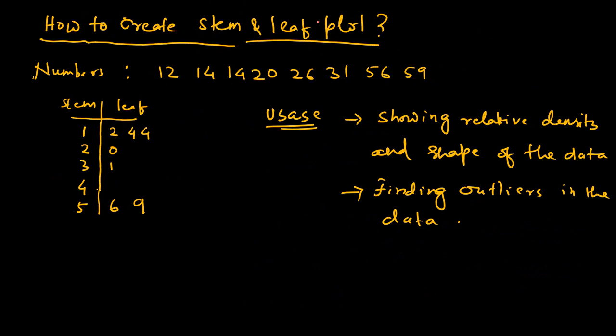How do we create the stem and leaf plot? Let's take an example here. I've got a number series and the first thing to do is sort it in ascending order. The number series is 12, 14, another 14, 20, 26, 31, 56, and 59. Now we want to represent this series on the stem and leaf plot.